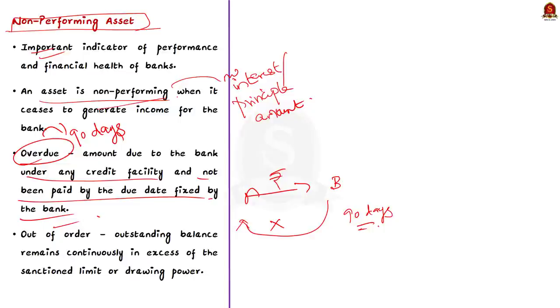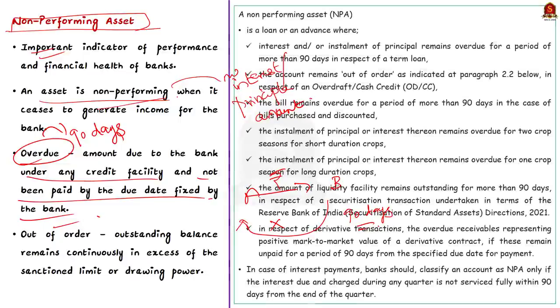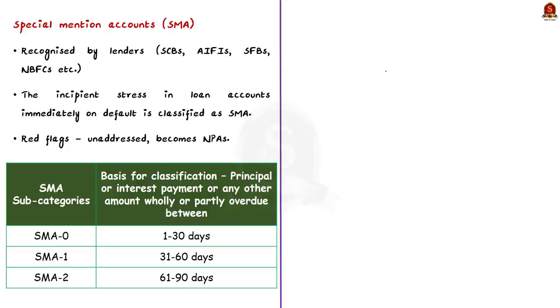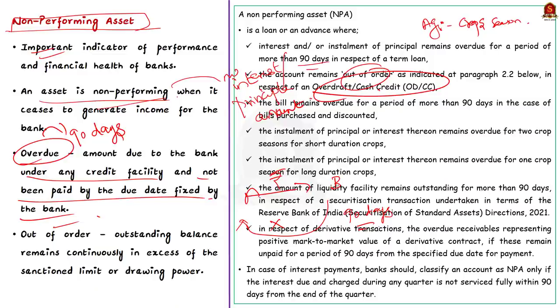As you can see here, this 90 day rule is followed by RBI for term loans, bills purchased and discounted for security transactions and derivative transactions. But in case of agricultural advances, number of crop season is taken into account to declare as NPA. Then in case of overdraft or cash credit, the out of order criteria is used. See, an account is treated as out of order if the outstanding balance remains continuously in excess of the sanction limit in that account or remains continuously in excess of drawing power.